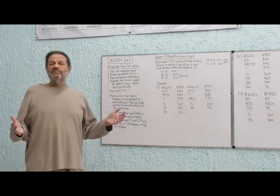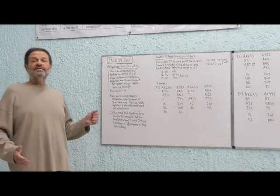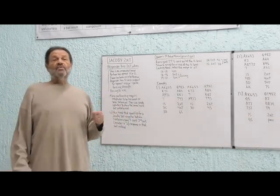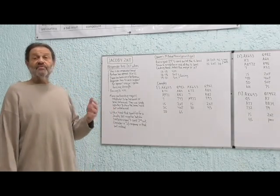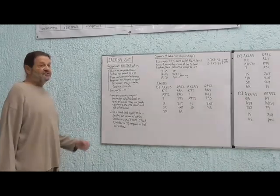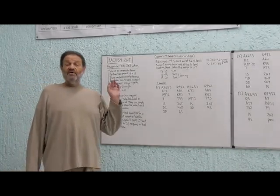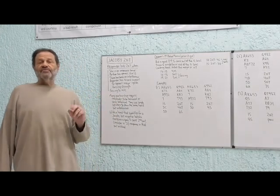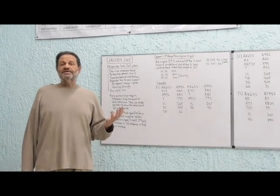When we have no singleton or void, when we have either a balanced hand, which means at most one doubleton, or a semi-balanced hand, which means two or more doubletons, then we will use the Jacoby 2 No Trump. And the shapes that are balanced would be four-triple-three, four-four-three-two, five-three-three-two. All those hands have at most one doubleton.